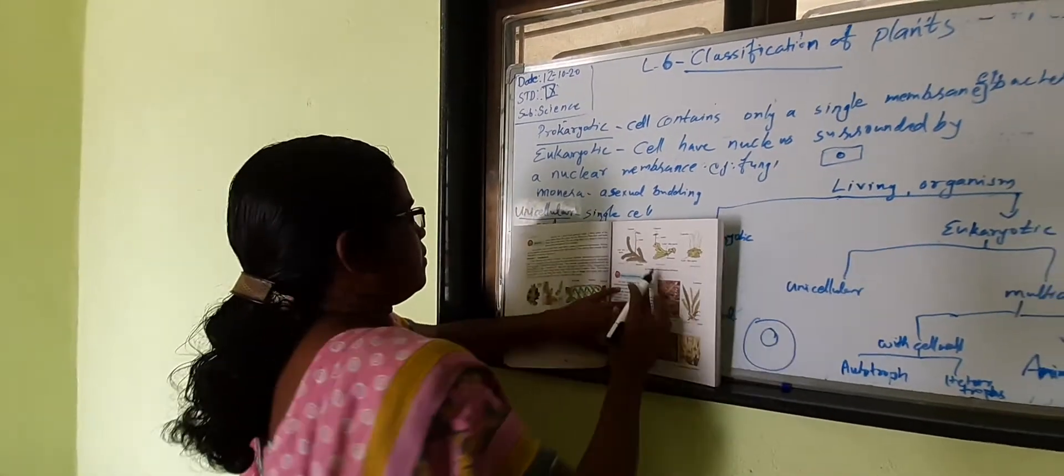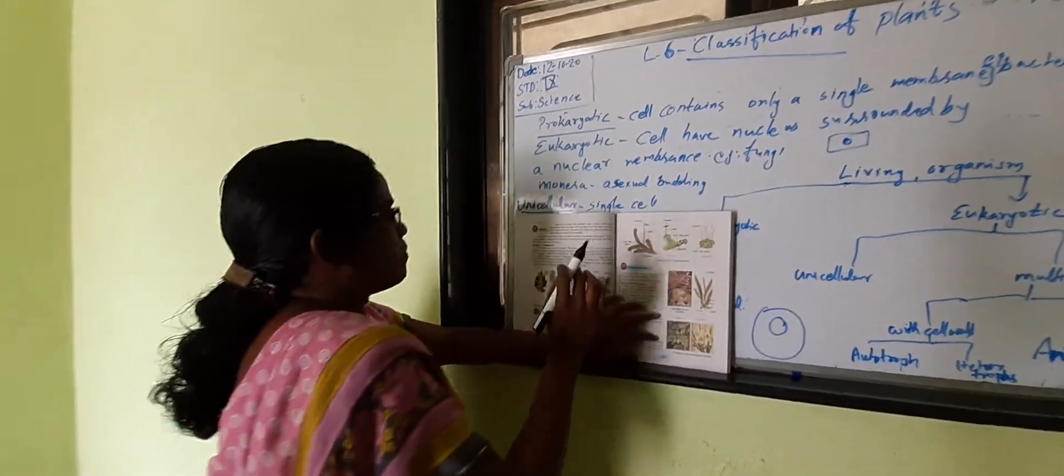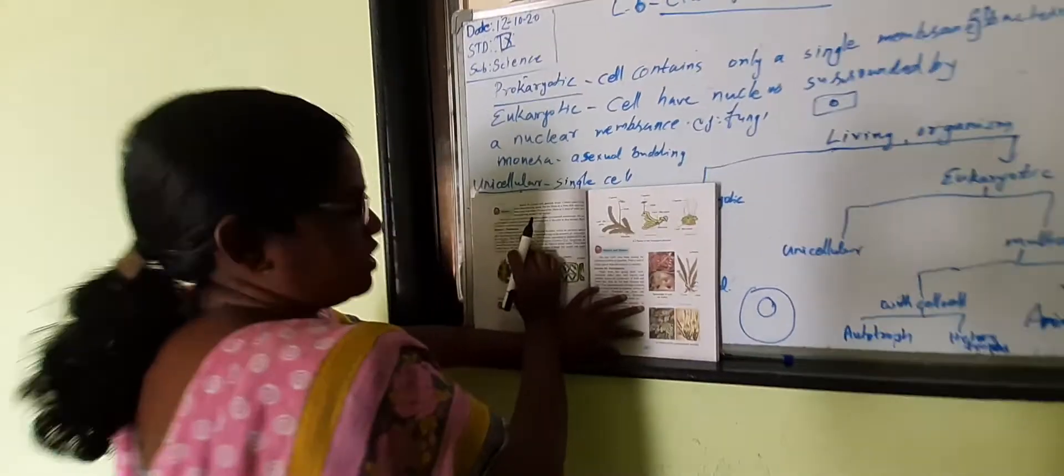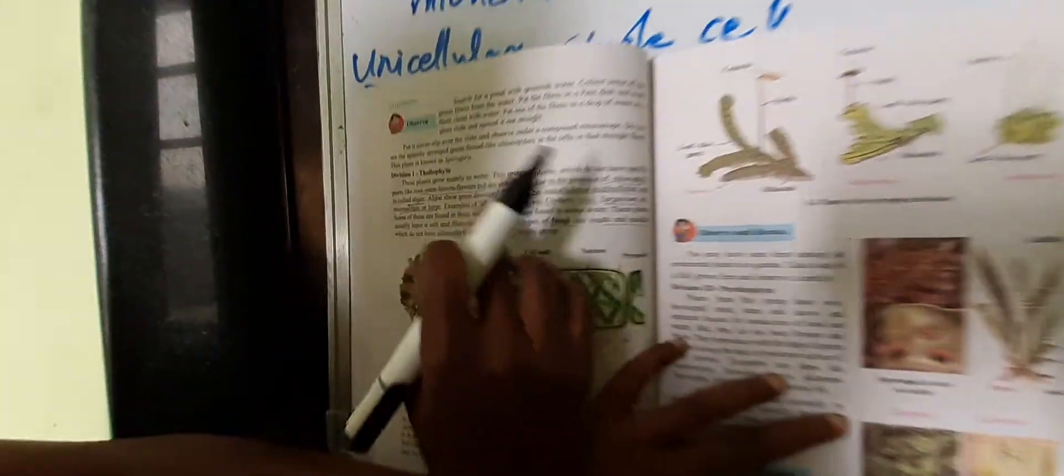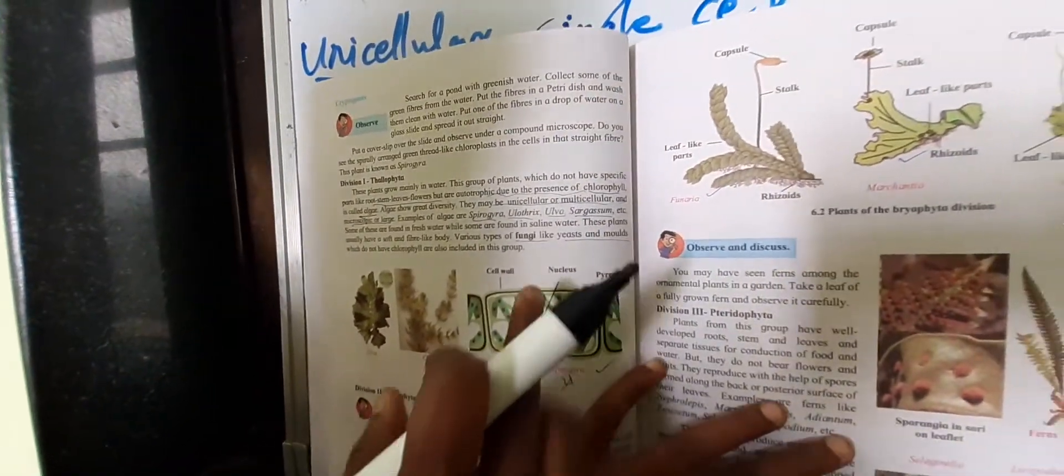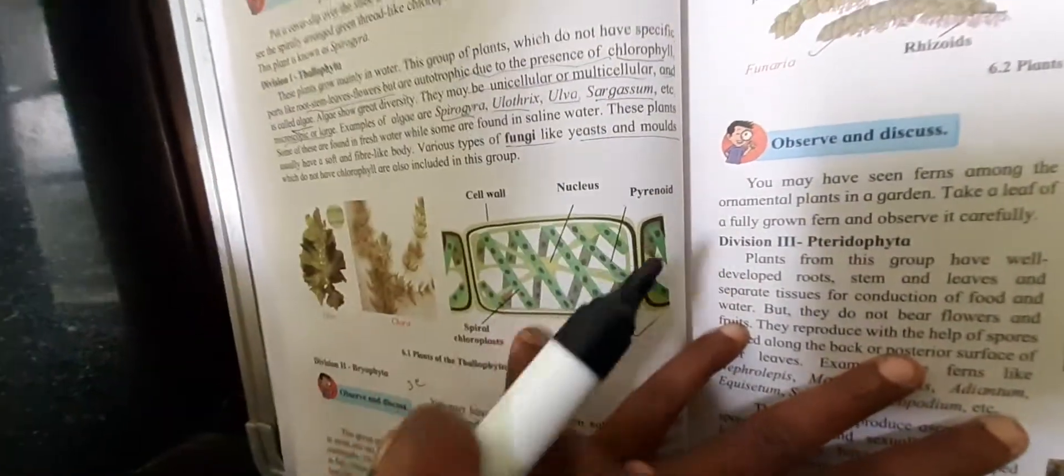Once again I am saying that this video has some problem, the last one is not finished. That's why, Thalophyta: these plants growing in water, this group of plants which do not have specified parts - root, stem, leaves, flowers - are not differentiated but are autotrophic.